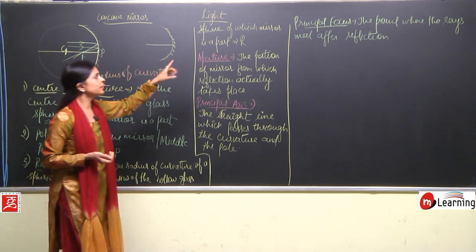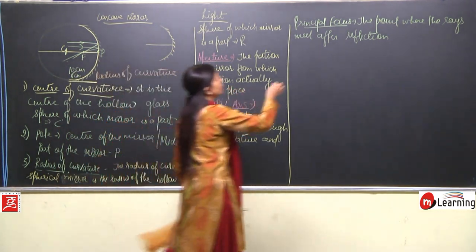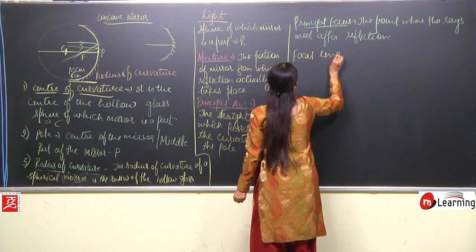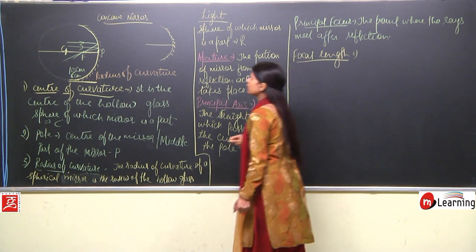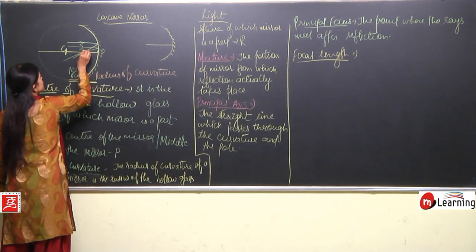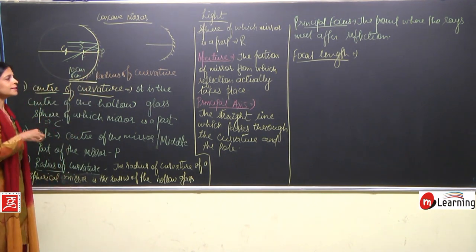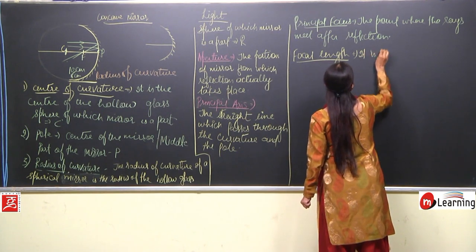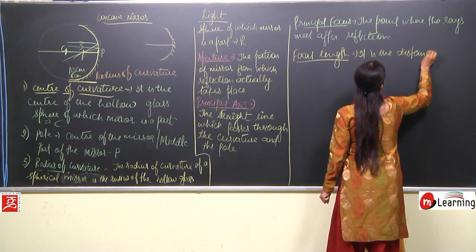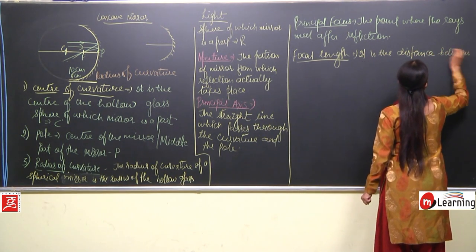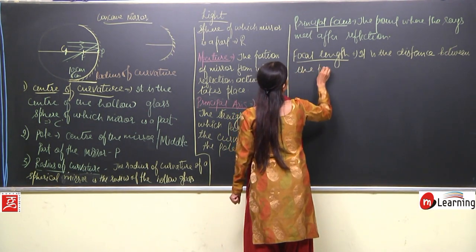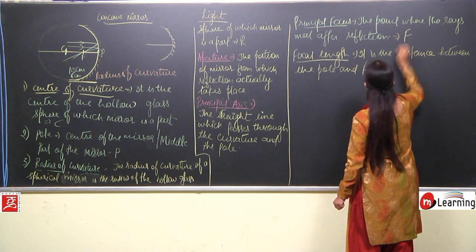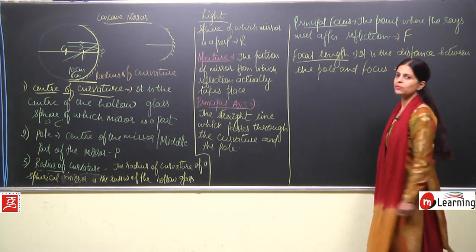The principal focus is the point where the rays meet after reflection. Now we will talk about focal length. The focal length is the distance between the focus F and the pole P. It is the distance between the pole and the focus. Principal focus is represented by F and focal length is represented by small f.